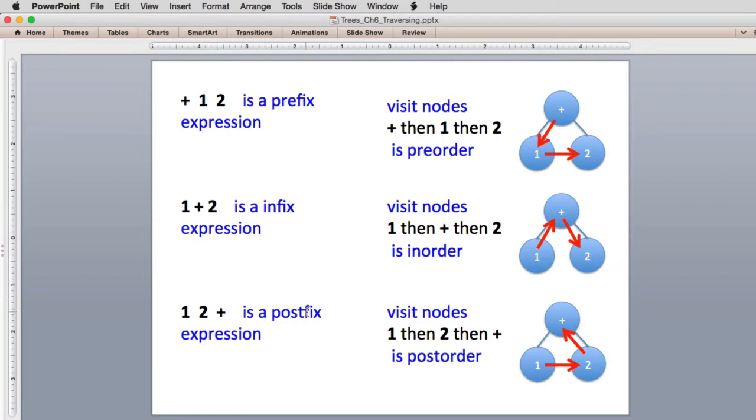And finally, the postfix expression, which is called postorder for a tree, you have the left and right operand, and then you have the operator. So in the tree, you visit the left number, and then the right number, and then you go up for the operator.